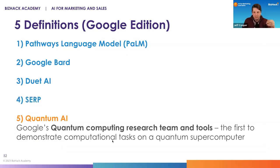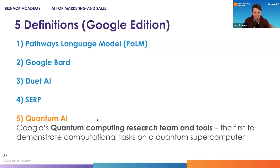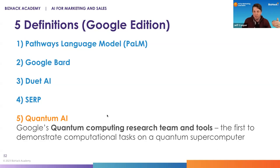Quantum AI is a nod to Google's deep expertise in this space. Google has a quantum computing research team and a set of tools and libraries available to developers to help push and innovate in the field of quantum research. Google was actually the first team to demonstrate computational tasks on a quantum supercomputer — they were able to actually do a calculation, not just do theory. This is important because one of the key components to the performance of artificial intelligence is computational power. Quantum computing takes what we can do right now on GPUs to a whole other level — like a thousand times what we're talking about right now. So Google is sitting on a hardware innovation here that could be very impactful in this domain.